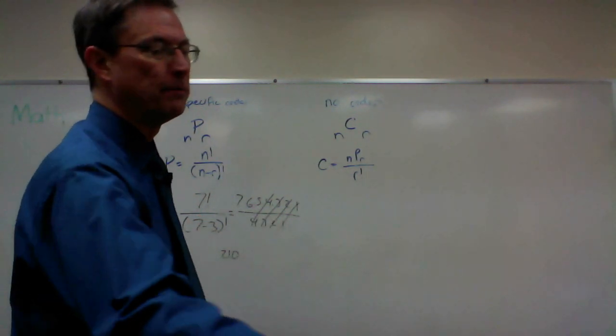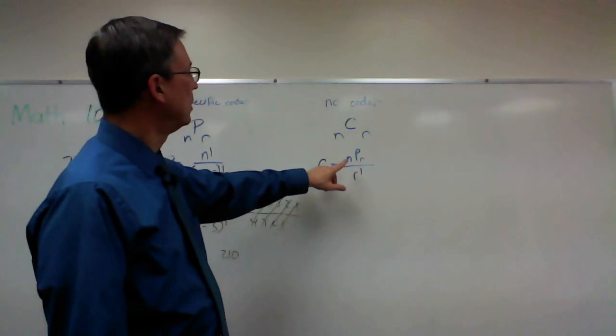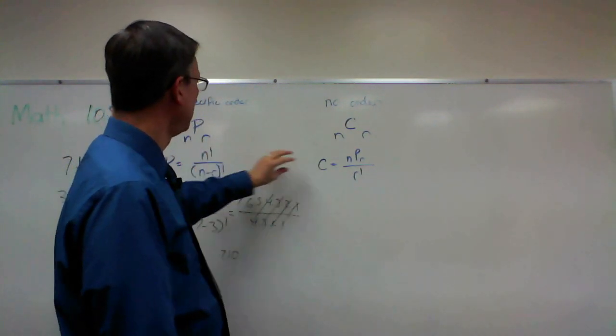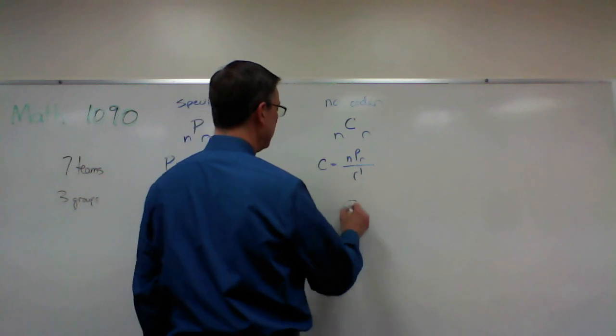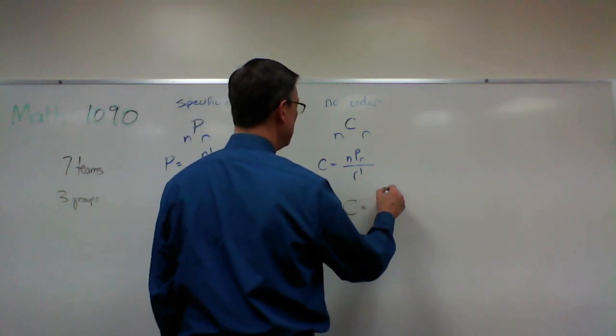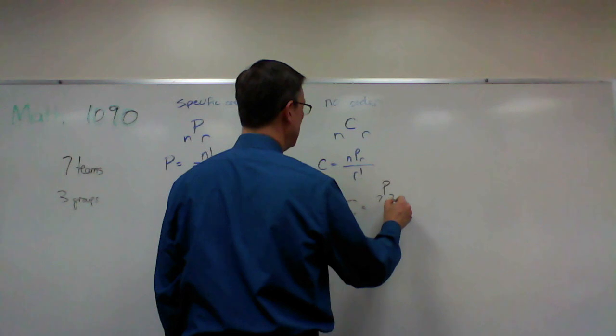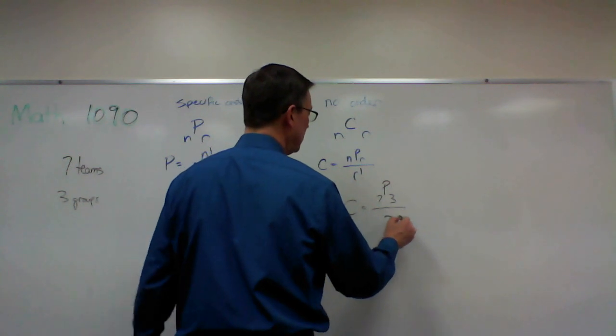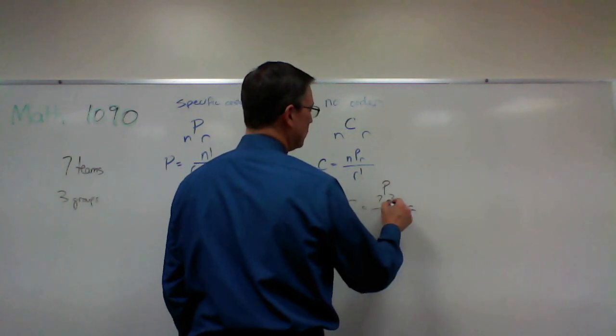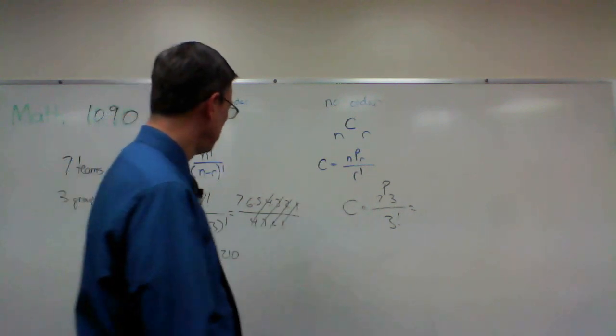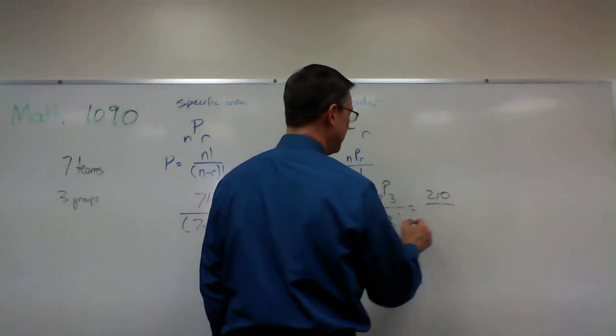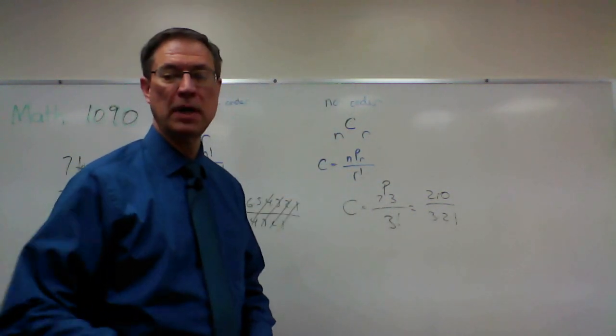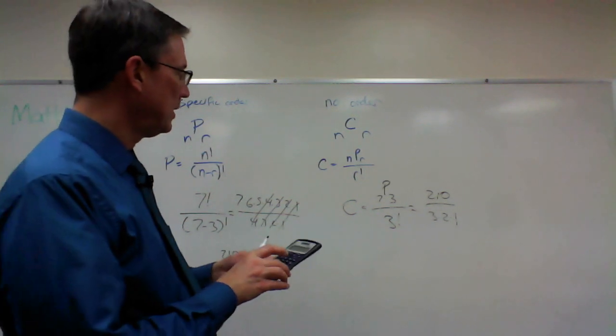Then a combination would be taking the same answer to this, so we would solve this part of the problem first. So combination would be 7 and the 3 over r, which in this case is the 3 factorial. I already solved this here and that's 210, but then I'm going to divide by 3 times 2 times 1. So 210 divided by 6.